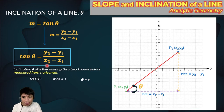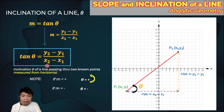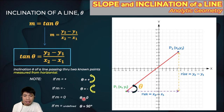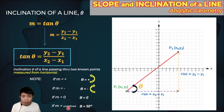If the slope is positive, theta will also be positive, meaning the angle is measured counterclockwise. If the slope is negative, the angle that comes out of your calculator will be negative, meaning the angle was measured clockwise from the horizontal. If the slope is zero, it is a horizontal line, so theta is also zero. And if the slope is undefined, then theta is 90 degrees, because a vertical line makes a 90-degree angle with the horizontal.